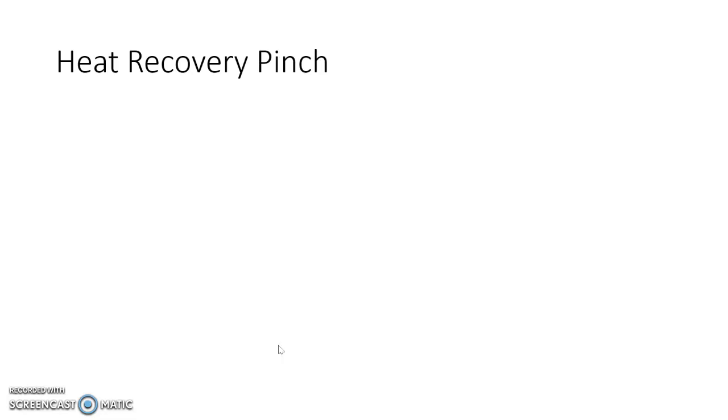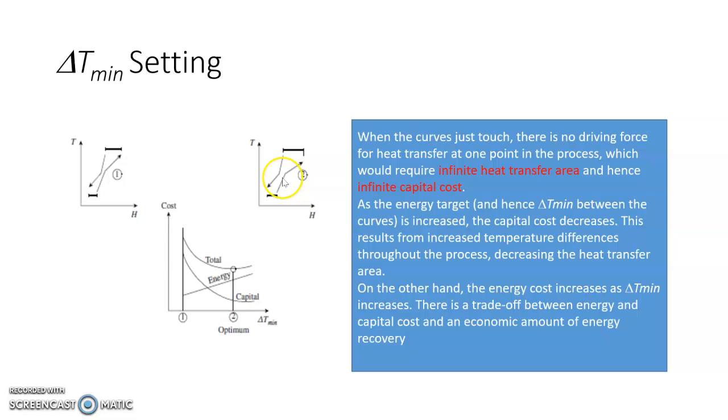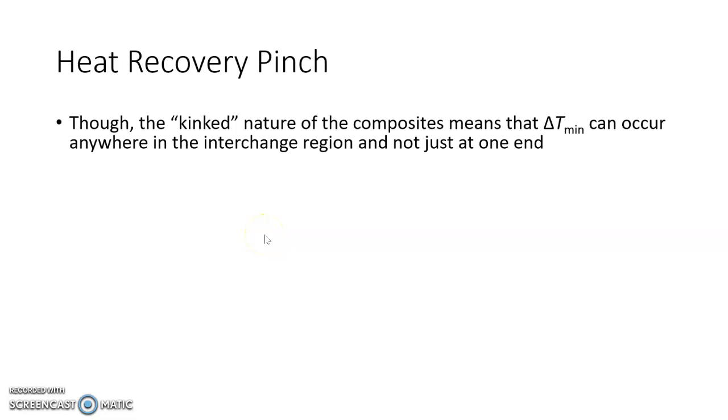Now, the point where you have delta T minimum is known as a pinch point or a pinch for any given heat exchanger network. So pinch is nothing but something which gives you a kind of minimum temperature difference between the hot and cold process streams. When you have the diagram which changes its slope, which is shown here by the word kinked, the delta T minimum can occur anywhere in the interchange region and not just at one end.